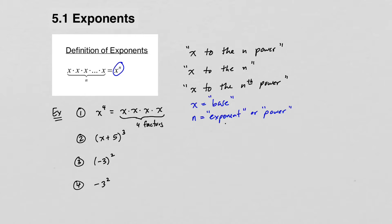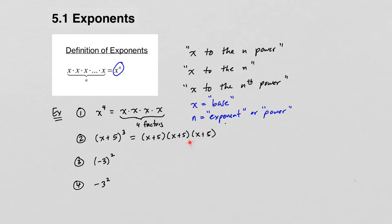The next one — (x + 5) quantity to the third power — means (x + 5) times (x + 5) times (x + 5). So we're just repeating the base, which in this case is x + 5, three times. These are all multiplied together, and later in this chapter we will actually learn how to multiply this out, but for now we'll just leave it like this.